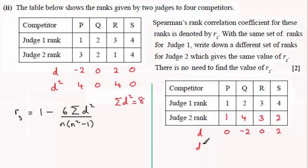Therefore, when I square these, you're going to have 0, 4, 0, 4, and so the sum of d squared is going to still equal 8. That would be my answer for the ranking that Judge 2 can have so that Rs is exactly the same for both these tables.